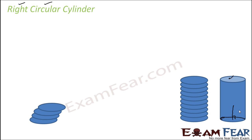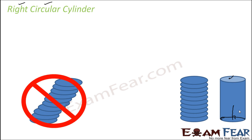For example, if you don't keep the stack vertically, you get a different kind of figure and this is not a cylinder. For it to be a right circular cylinder, the stack must be kept vertically and all the plates have to be circles. If either condition is not satisfied, it is not a right circular cylinder. In this chapter, we are dealing only with the right circular cylinder, so unless stated, the cylinder will be assumed to be the right circular cylinder.